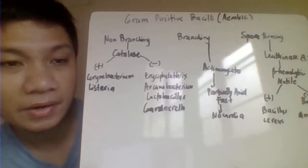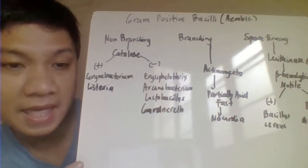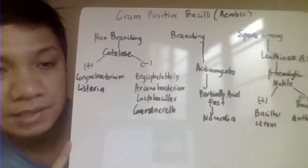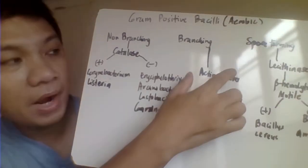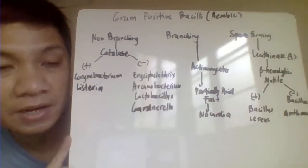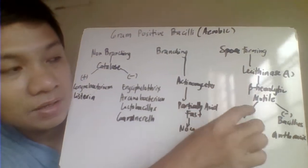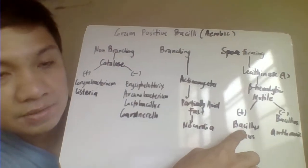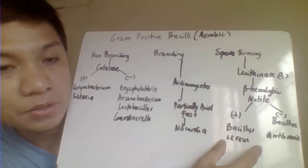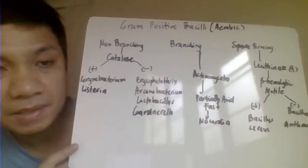All the rest which are non-spore former, non-branching, and catalase negative includes the genus Erysipelothrix, Arcanobacterium, Gardnerella, and even your Lactobacillus. Branching gram-positive bacilli includes your Actinomycetes and partially acid-fast Nocardia. For the spore formers, which are also catalase positive, we have beta-hemolytic and motile Bacillus cereus, and non-hemolytic, non-motile Bacillus anthracis.